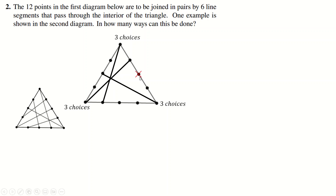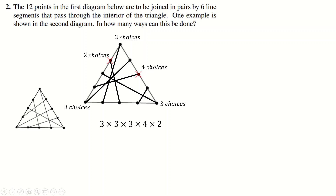Whatever choice you make on one corner — say if you go from here to here — that doesn't affect the number of choices on another corner. So three times three times three is 27 choices for linking up the diagonals. Now consider the midpoint of one side: it has four choices — one, two, three, or four. Then you choose another dot, which looks like it has three choices, but actually only has two, because one option would leave the last two dots unable to connect through the triangle. So our choices are 3 × 3 × 3 × 4 × 2.